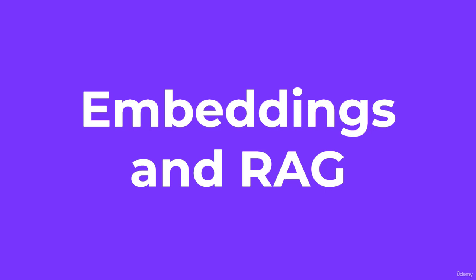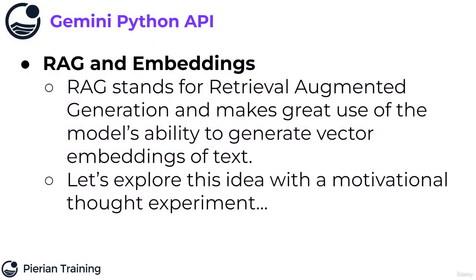Welcome back everyone to this section of the course where we're going to be focusing on vector embeddings and how I can use them for RAG. RAG stands for Retrieval Augmented Generation, and it makes great use of the model's ability to generate vector embeddings of text. It's a simple idea but a very clever one.